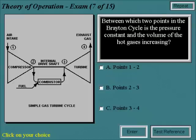Between which two points in the Brayton cycle is the pressure constant and the volume of the hot gases increasing?